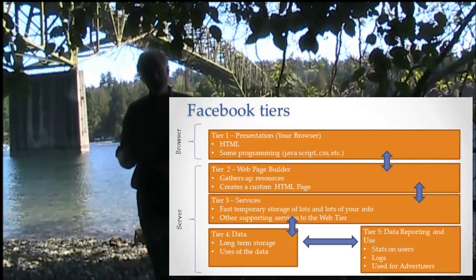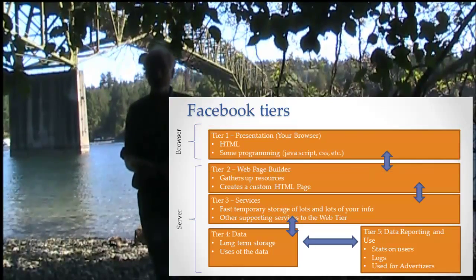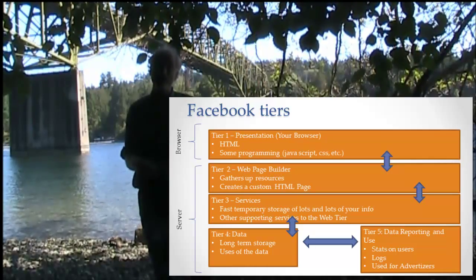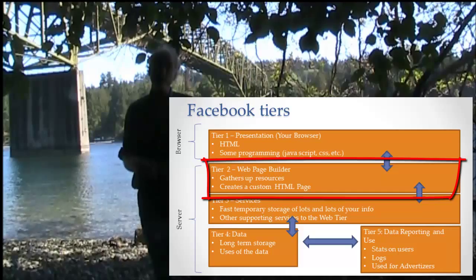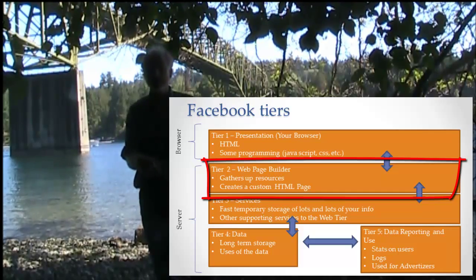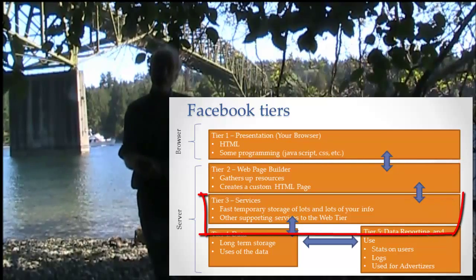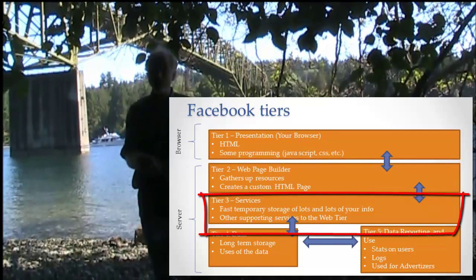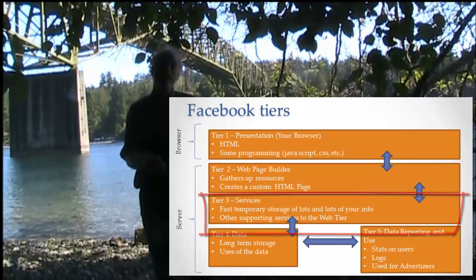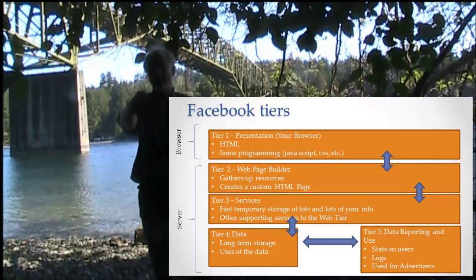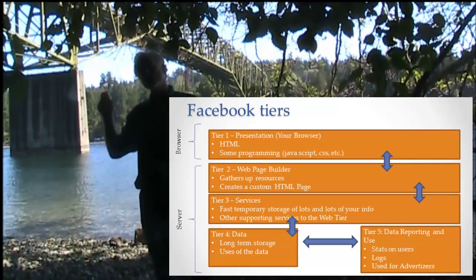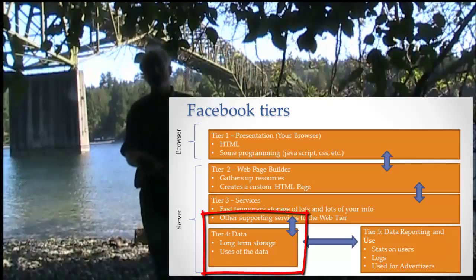On the other side of the Internet — which, remember, we don't consider to be a separate tier — is tier number two, which is the web page building tier. It's responsible for collecting up all the right information to put on your Facebook page and sending that to your browser. Behind the web page building tier is a services tier, which handles all the behind-the-scenes things. You can think of the web page building tier as the front desk, and the back room where all the real work is happening is the services tier.